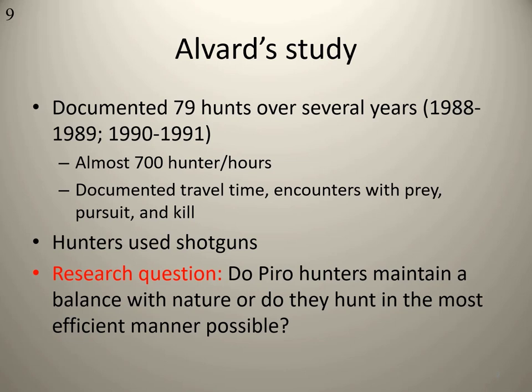For each kill, Alvard recorded the species, the sex, the age of the animal, the reproductive status, the weight, and also the type of technology used — whether they were using traditional technology or shotguns.